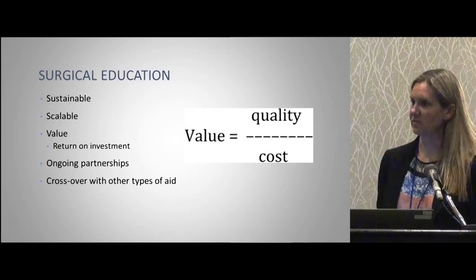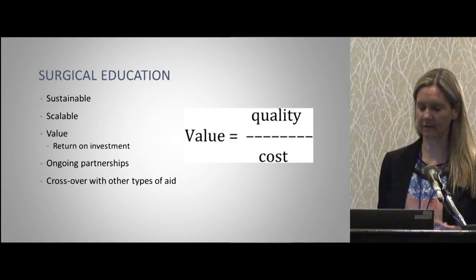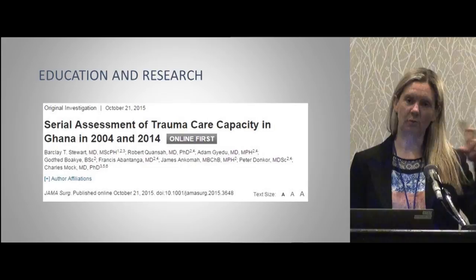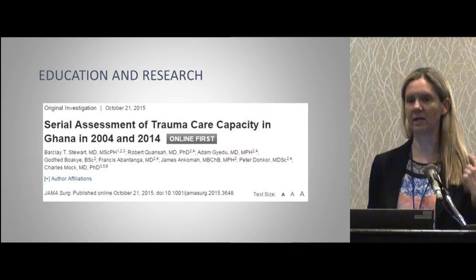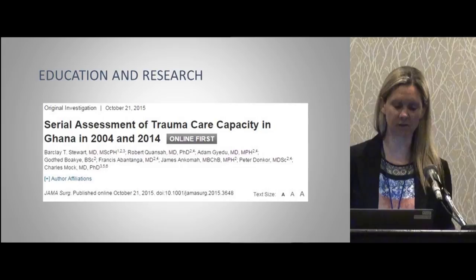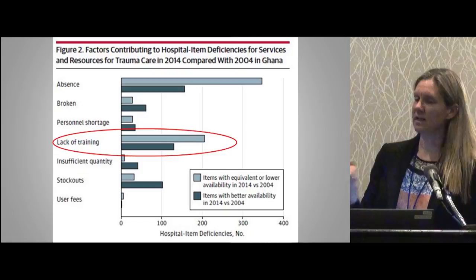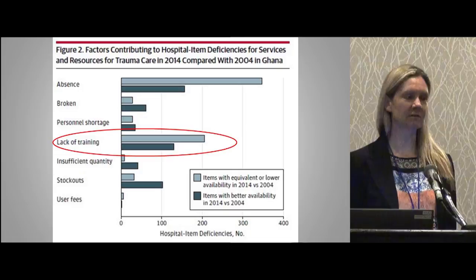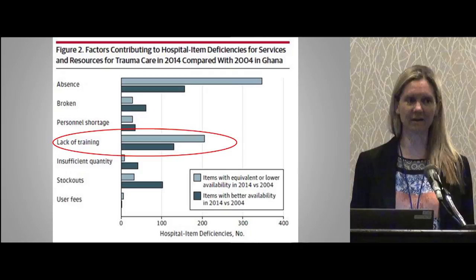Education also ties in very well with research. A group just up the road from where I work in Ghana did an assessment of trauma capacity in 2004, then reassessed ten years later. The biggest reason some piece of equipment wasn't available was simply that they didn't have it. But the second biggest reason was that they had the equipment and nobody knew how to use it. That's a lot easier to fix — if you have chest tubes and nobody knows how to use them, I can teach that much more easily than I can set up a long-term supply pipeline. I found this really interesting and very actionable.